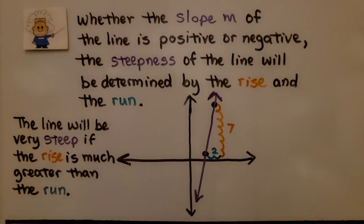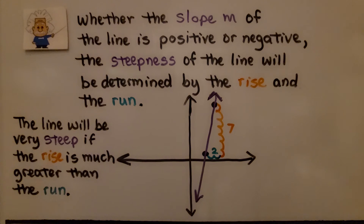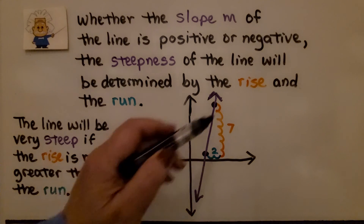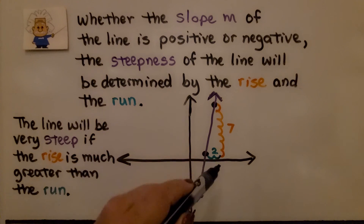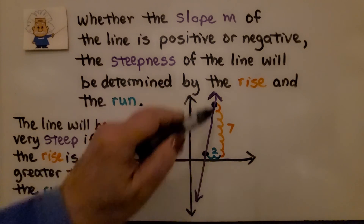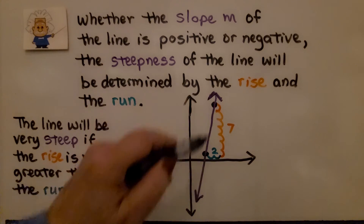Whether the slope m of the line is positive or negative, the steepness of the line will be determined by the rise and the run. The line will be very steep if the rise is much greater than the run. Here we have a rise of 7 and the run is only 2 — look how steep that line is.